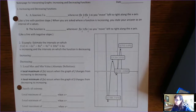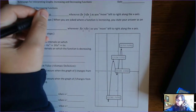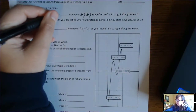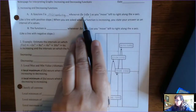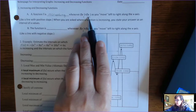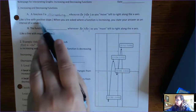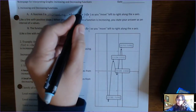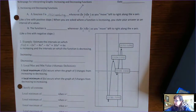This lesson is for interpreting graphs, increasing and decreasing functions. Definition first: a function f is increasing whenever the y-coordinate is greater than the previous y-coordinate as you move left to right along the x-axis. It's like a line with a positive slope — as you go left to right and you're going up, that's an increasing function.